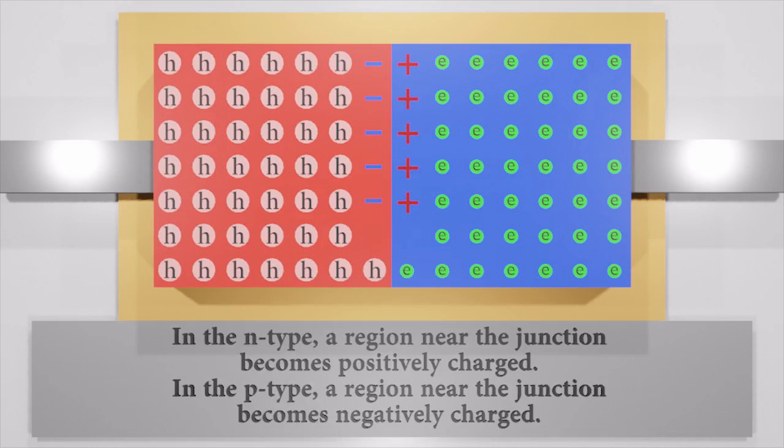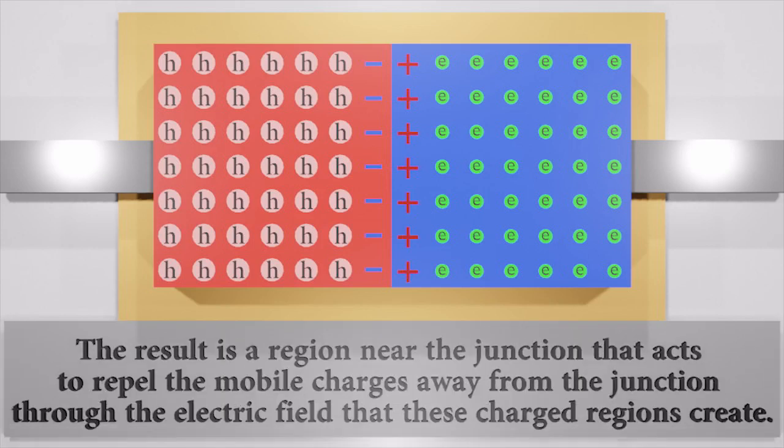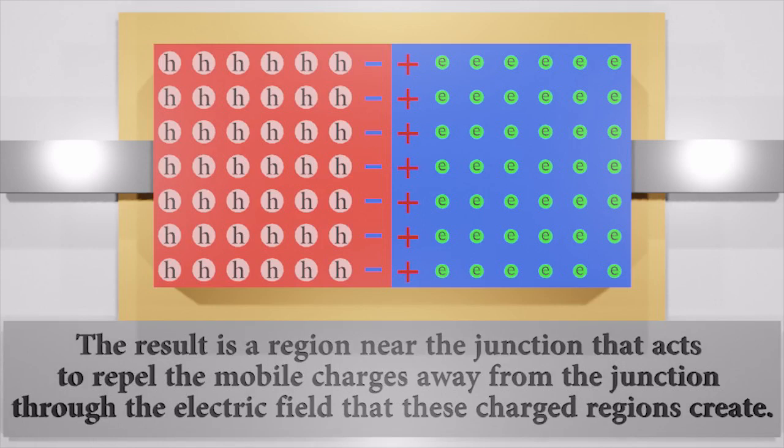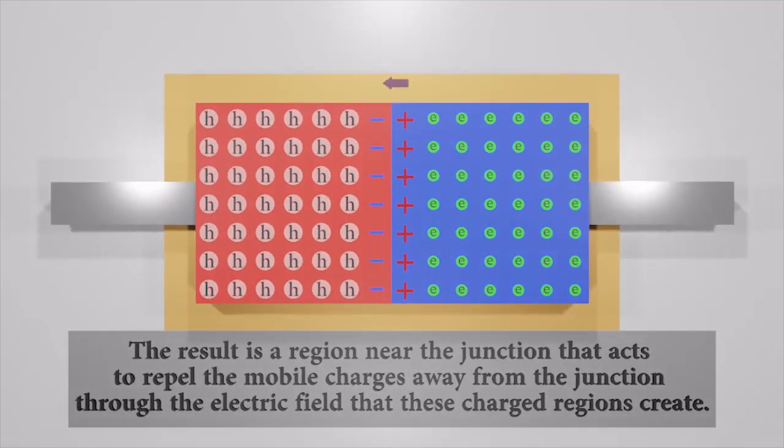So in the n-type, a region near the junction becomes positively charged. In the p-type, the region near the junction becomes negatively charged. The result is a region near the junction that acts to repel the mobile charges away from the junction through the electric field.